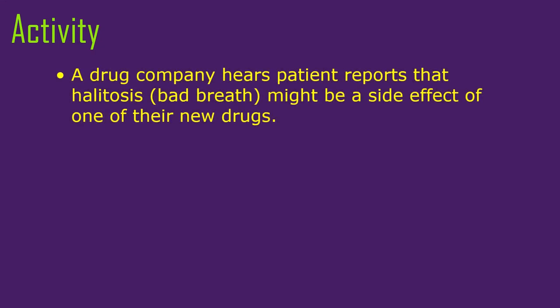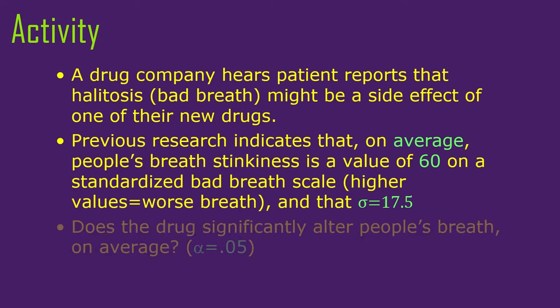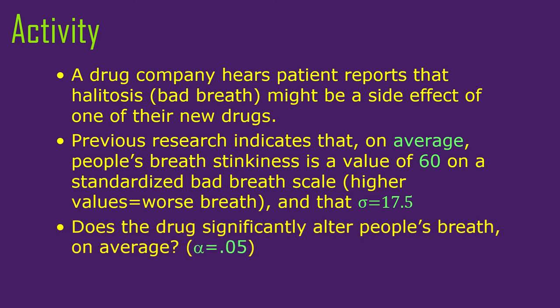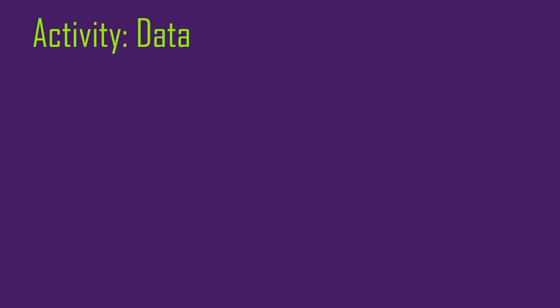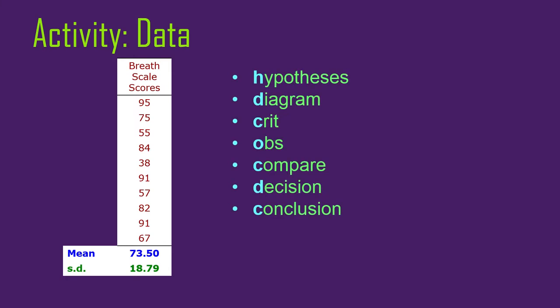Let's dive into this activity. Let's assume there's a drug company that hears patient reports that bad breath might be a side effect of its drug. A previous report indicates that people's breath stinkiness in general, on average, is a value of 60 on some kind of standardized bad breath scale — which I made up — with higher values being worse breath. The standard deviation of this breath stinkiness is 17.5. So we have a null hypothesis mean value and a population standard deviation. Does the drug significantly alter people's breath on average? So write out the hypotheses. The data they collect gives a mean of 73.5. There's always a difference — it's higher than the mean, so at least in this sample, breath was a little more stinky while on the drug. But that means basically nothing by itself unless we figure out how high that really is.